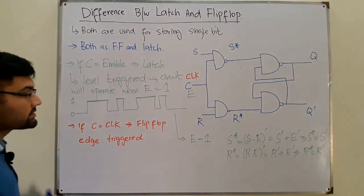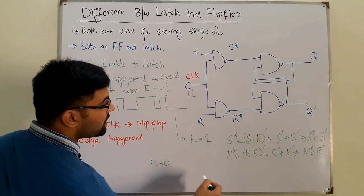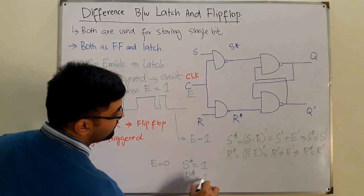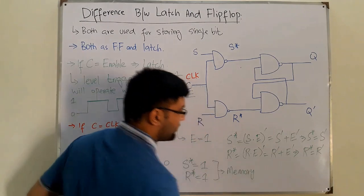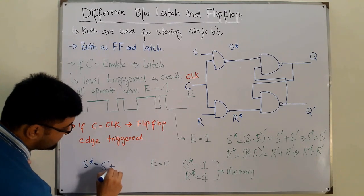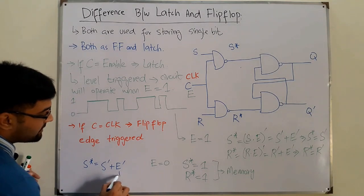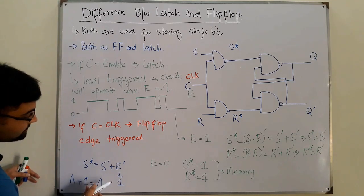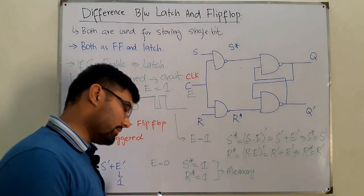If the enable signal is 0, then S-star equals 1 and R-star equals 1, which means the circuit is acting as a memory — the SR latch memory condition. This is because S-star equals S complement OR enable complement; enable complement is 1, and anything OR'd with 1 is 1. That is how S-star equals 1 and R-star equals 1, giving us the memory state.